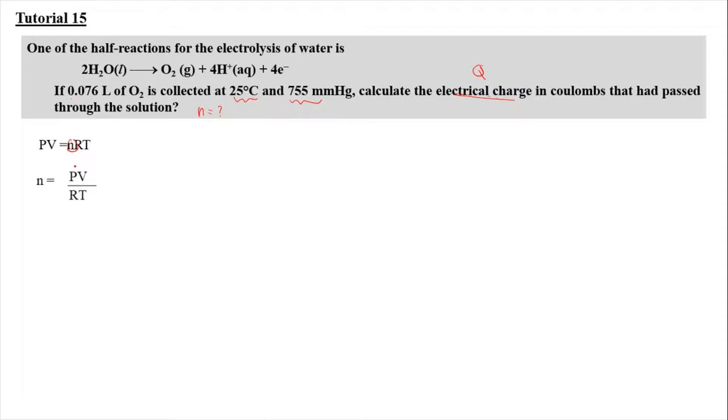And our pressure here is 755 millimeter mercury, which we can convert into atm. 760 millimeter mercury equal to 1 atm. So 755 millimeter mercury is going to equal to X atm. So we're going to get 0.9926 atm. And our volume here is given as 0.076. Our temperature here needs to be converted into kelvin, which is 298 kelvin. And our R here, which is the gas constant, is going to be 0.08206 liter atm per mole per kelvin.